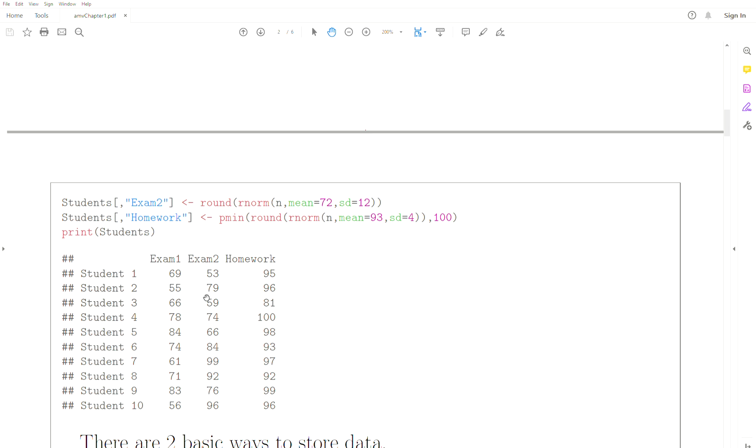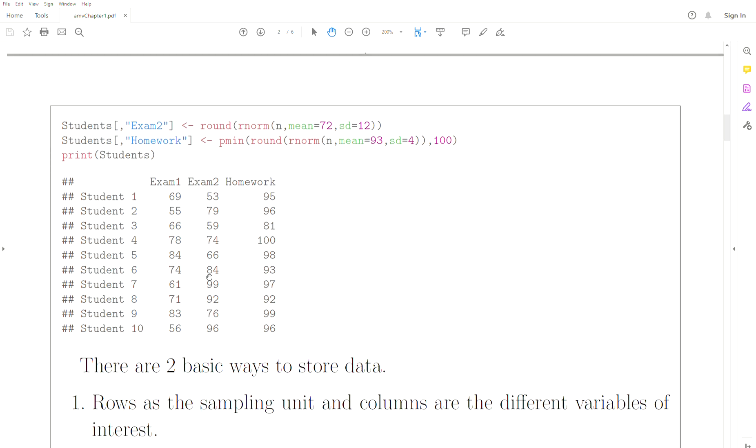Now there are two basic ways to store data - there's actually many different ways, but in my mind there's really two basic ways. One is the rows are the sampling unit.